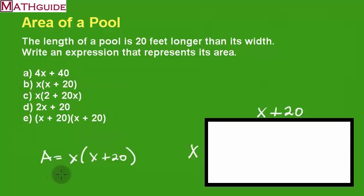Now there is no other answer that's equivalent to this. Just to make sure, we'll do a double check. If we do the distributive property and multiply through, X times X and X times 20, we get that.